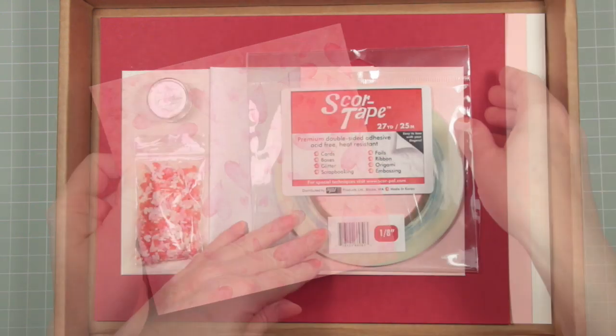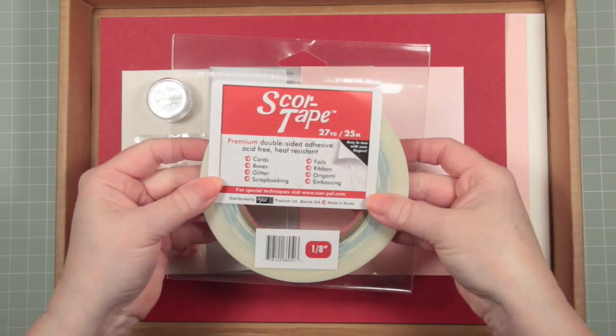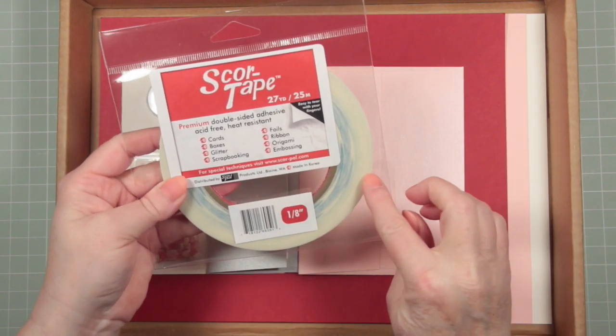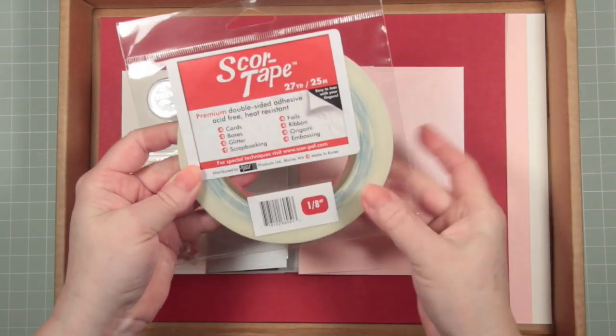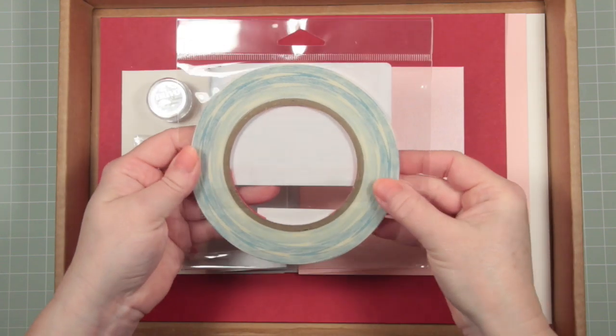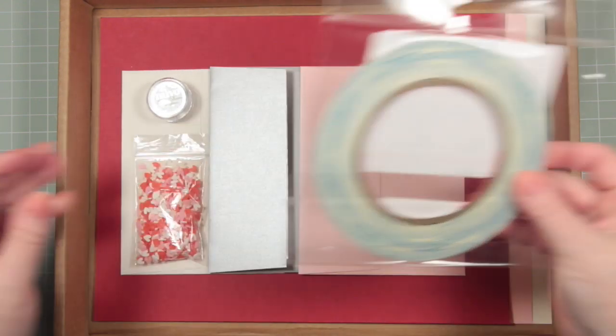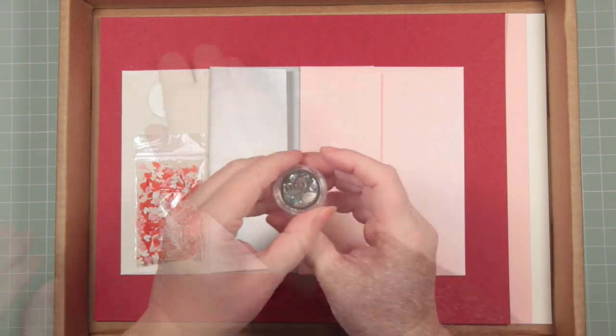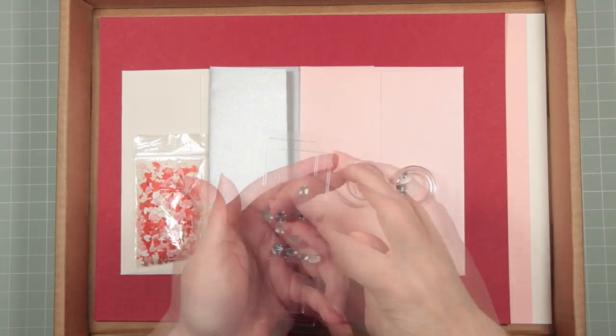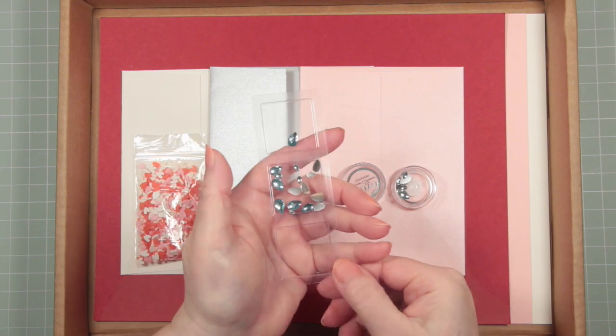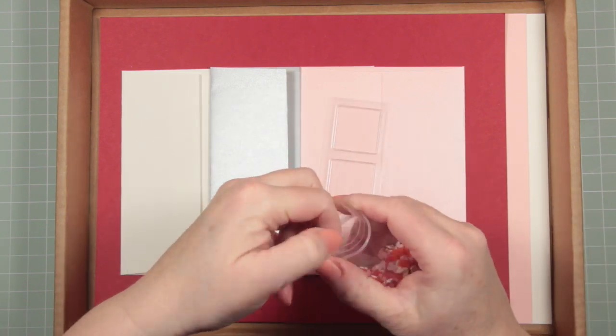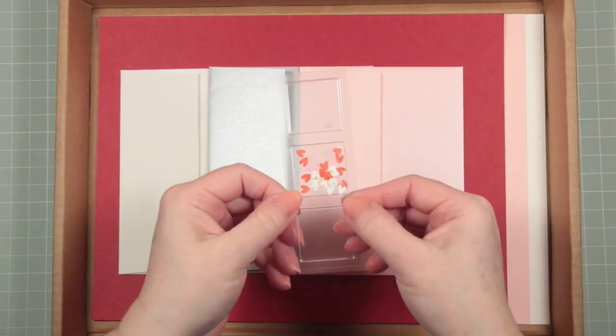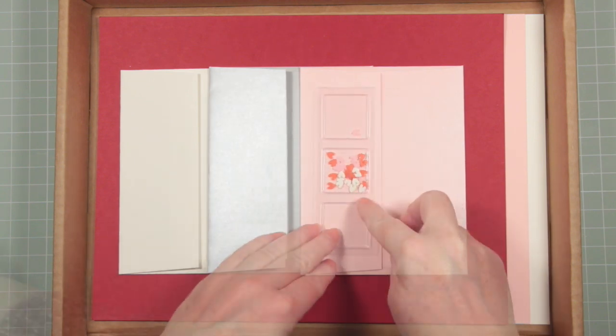Next up is a full roll of score tape. This is one-eighth of an inch wide which is about three to four millimeters and I'll show you why that's an ideal size for our projects. The cute little jar contains Nouveau Water Droplets, which are pure sheen gemstones, and there are little hearts in the bag in white, red and pink.